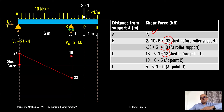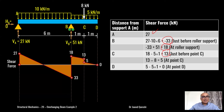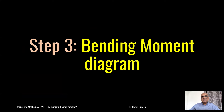Then from 18 I have another UDL, so the diagram is inclined again. Wherever you have a point load there will be an exact jump in the shear force diagram — down to 5 kilonewtons. Then finally at point D I have zero. You can then hatch this diagram to make it look professional, and that is the complete shear force diagram.